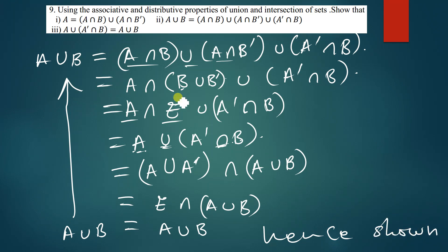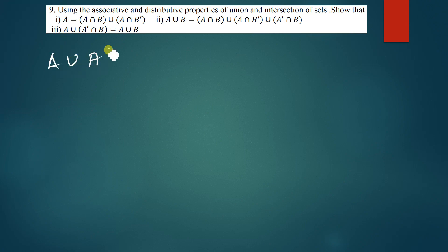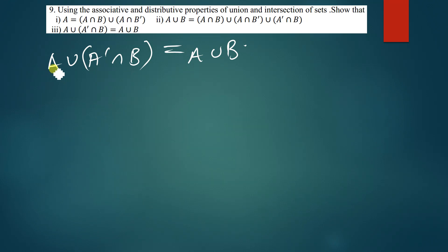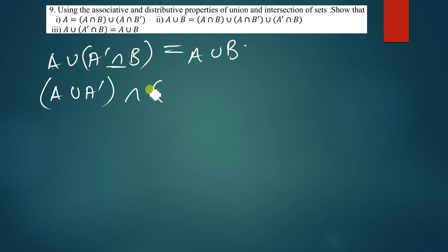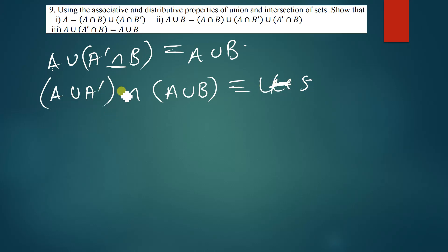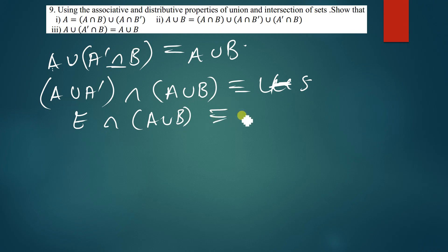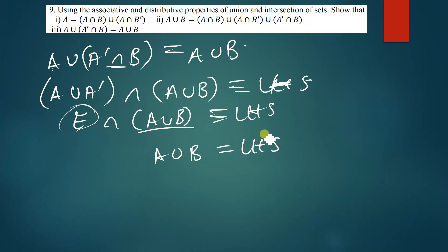The last question says: prove that A union (A'∩B) equals A union B. We distribute: A union (A'∩B) becomes (A∪A') intersection (A∪B). A union A complement gives us the universal set, so we have universal set intersection (A∪B). Since any set intersected with the universal set equals that same set, this gives us A∪B. Hence shown.